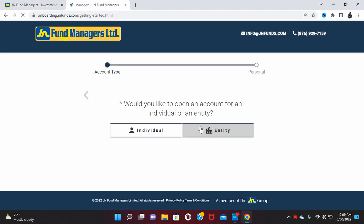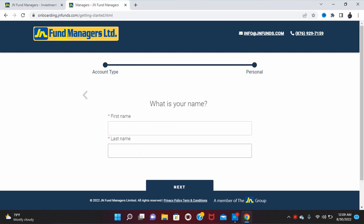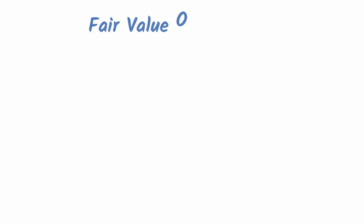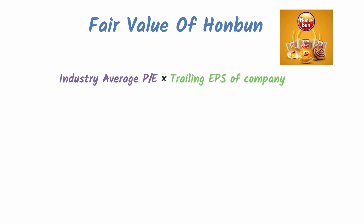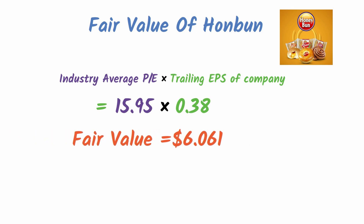The sign-up process is simple and done online — about 20 minutes, just needing identification. Now that we have the industry average PE, we can find the fair value of Honey Bun. The formula is: industry average PE multiplied by trailing EPS. The industry average as of last Friday was 15.95, multiplied by 0.38, giving a fair value of $6.06. Honey Bun was trading at around $8 at that time.